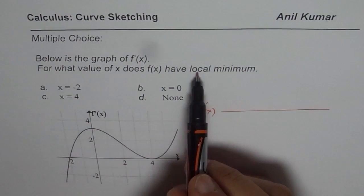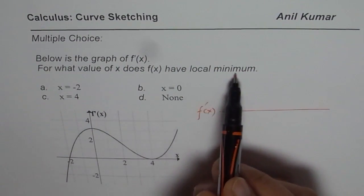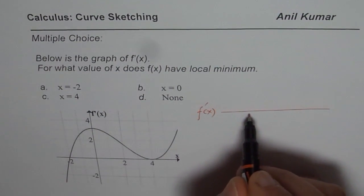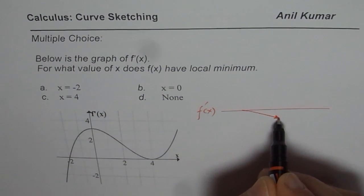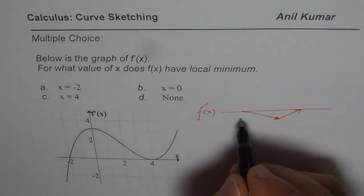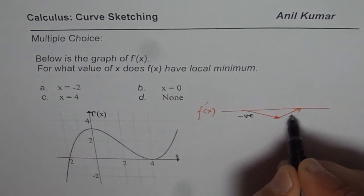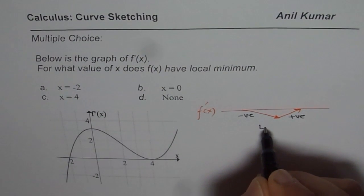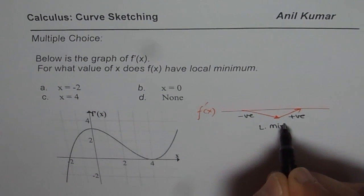If you are looking for a local minimum, what are you looking for? A point where the derivative changes from negative to positive. That is local minimum. From negative to positive gives us local minimum. That is the concept.